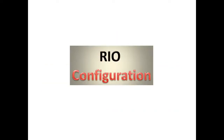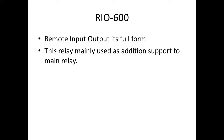In this section we are going to see how to configure the RIO 600 relay. This relay is mainly used for additional support for the main relay. If our main relay does not have sufficient input and output contacts, then we can add this RIO relay. This RIO relay will act as a binary input-output for the main relay. RIO stands for remote input-output.